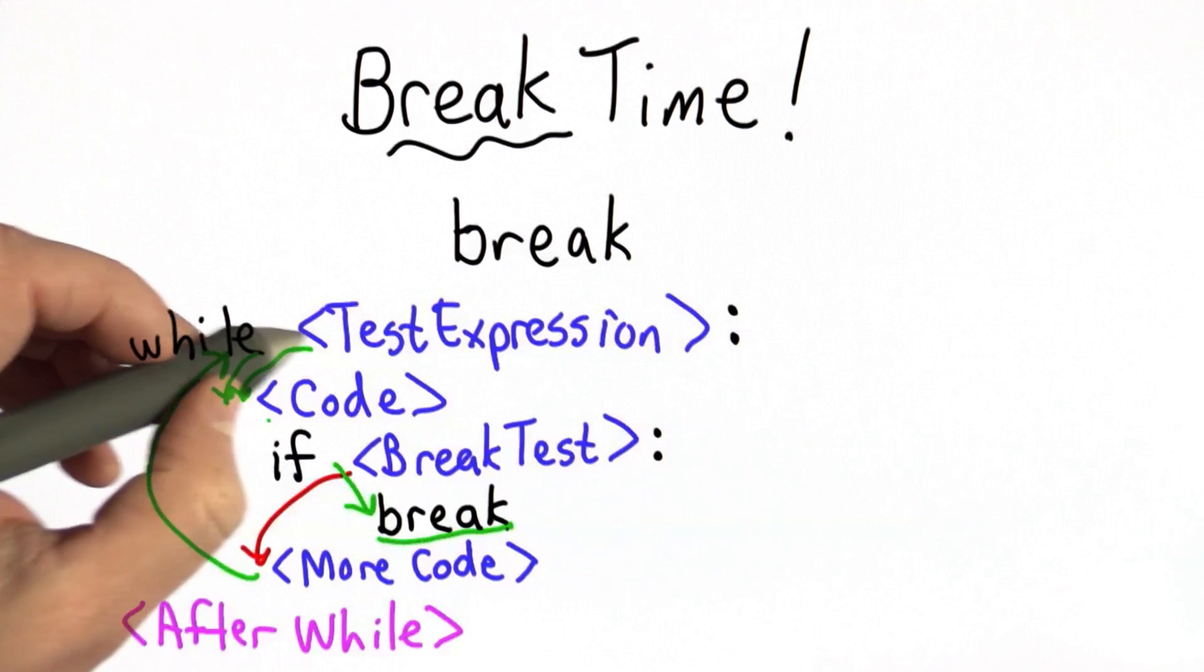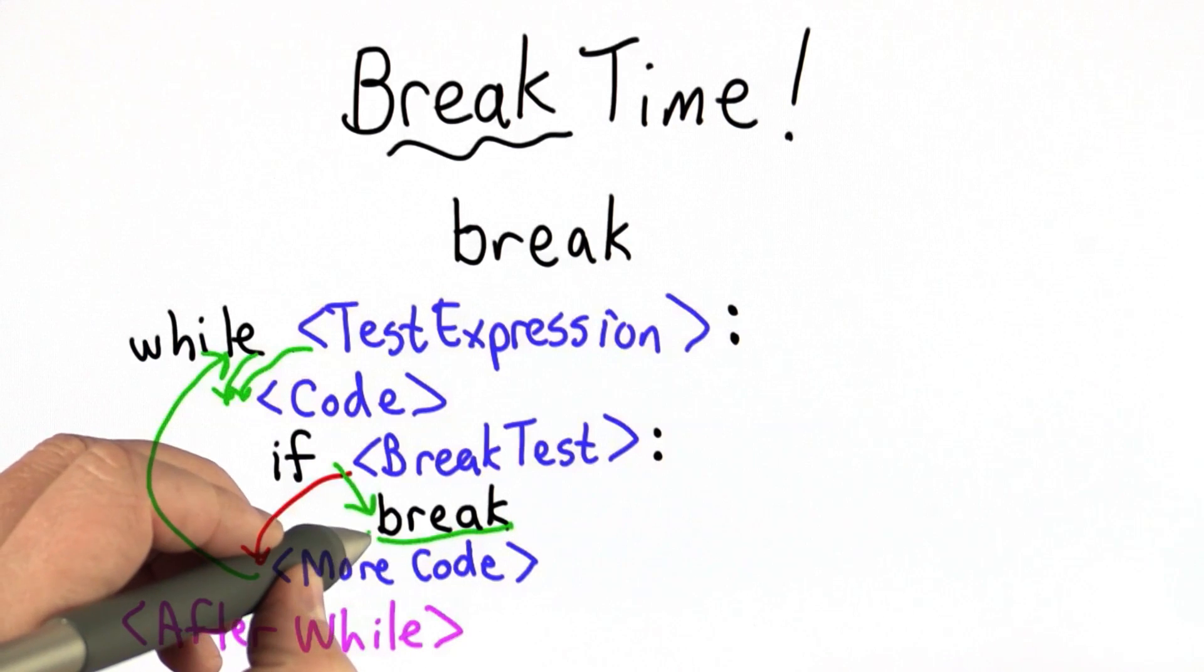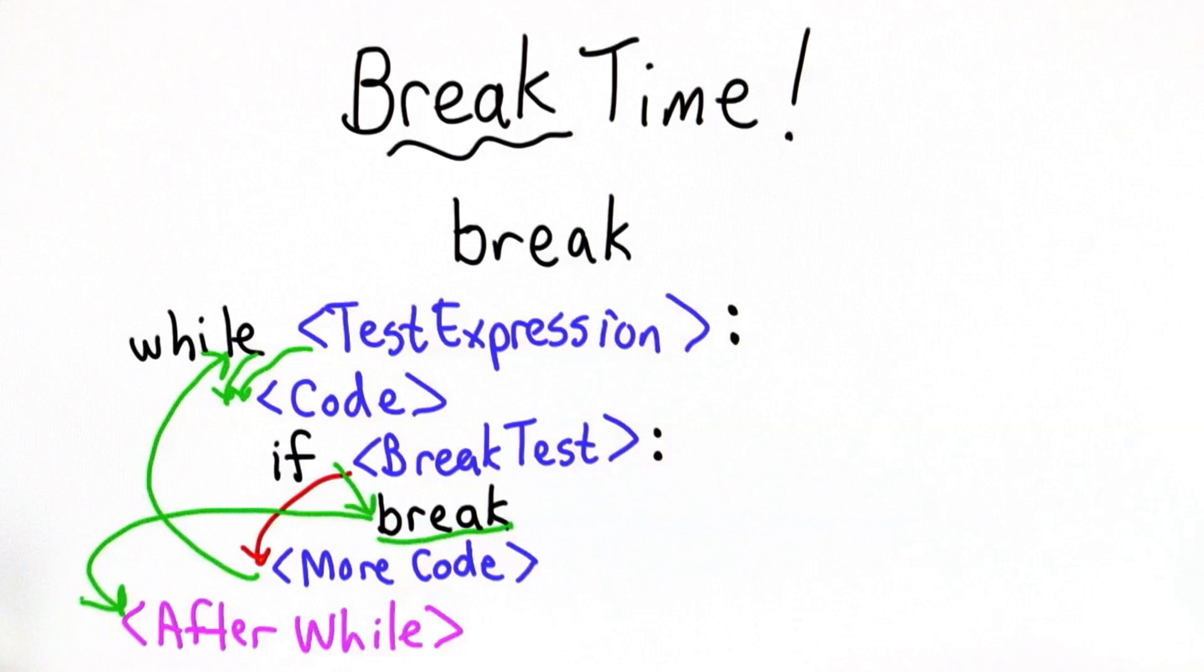What break does is jump out of the loop. We don't execute the more code, we don't execute the test expression again. If the break happens, we jump to the code after the while. This gives us a way to break out of the middle of the loop.